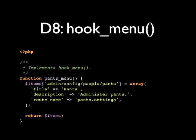This is the Drupal 8 version of hook_menu. Hook_menu is about to die. Right now, if you're working on porting your modules, you'll need this for any visible menu links, but the only things that remain are the title and description. You'll notice we have a route name here — pants.settings — it's a machine name and you can choose it.